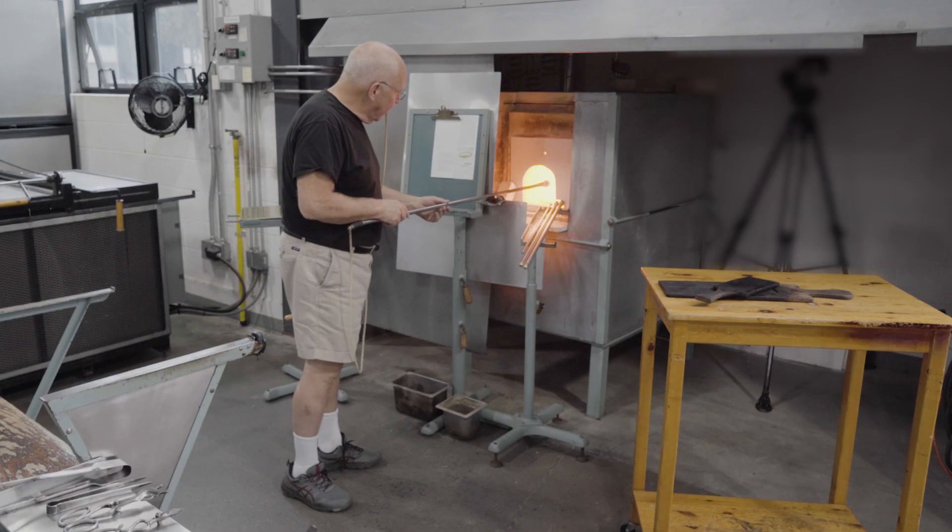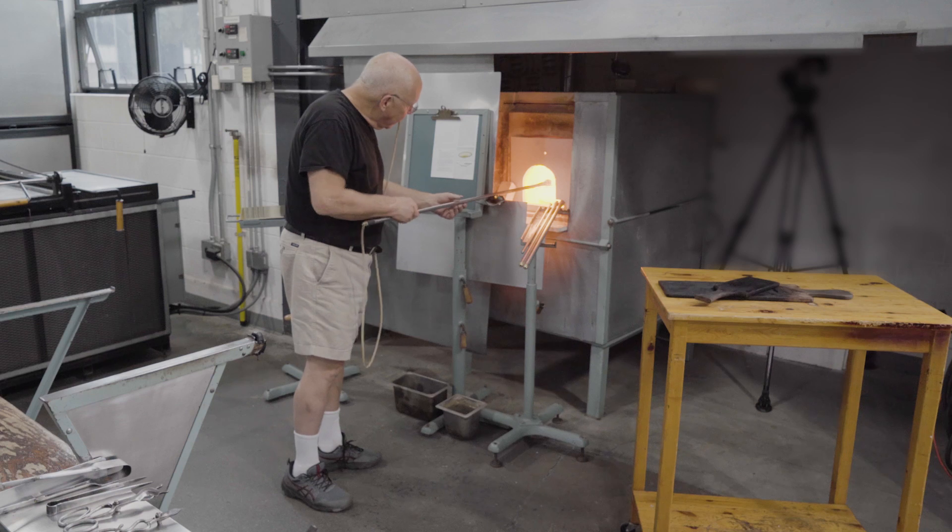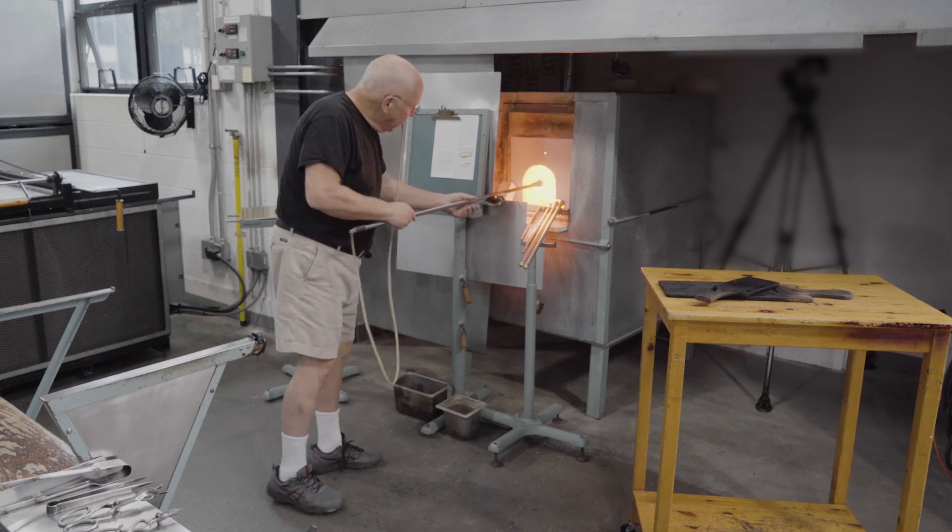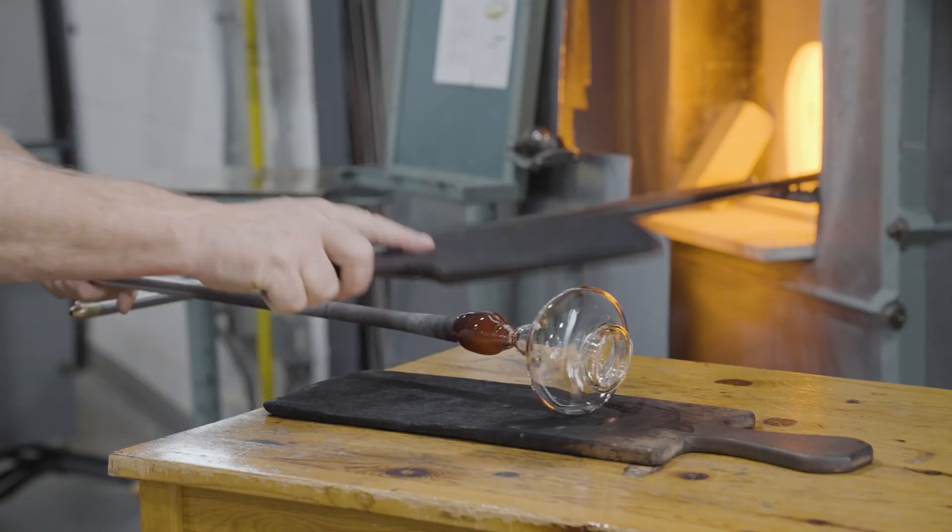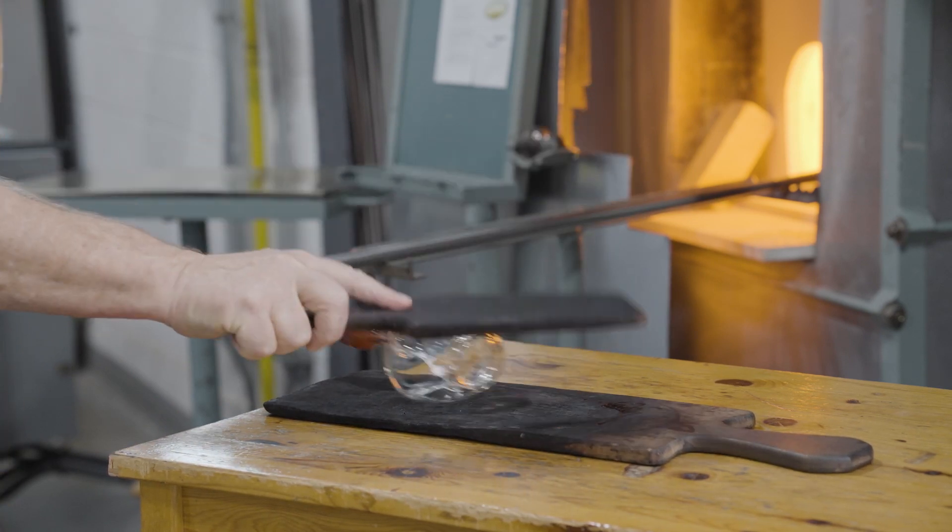The process begins like any round bowl or low plate or platter. A bubble is blown, a Roman foot is made, and in this case, the bubble is flattened.